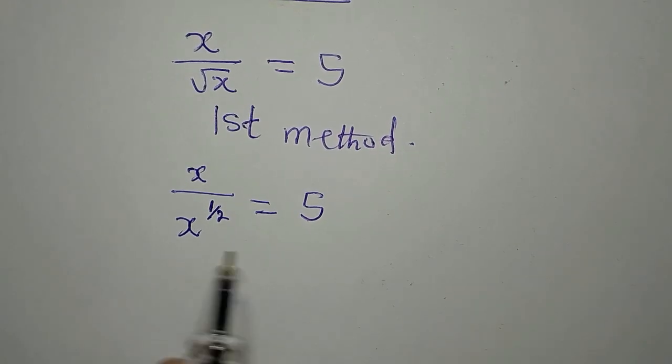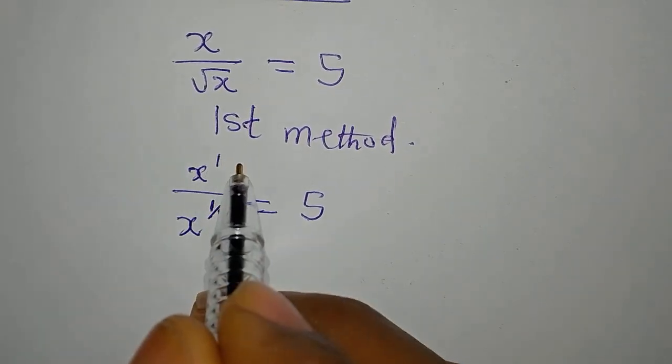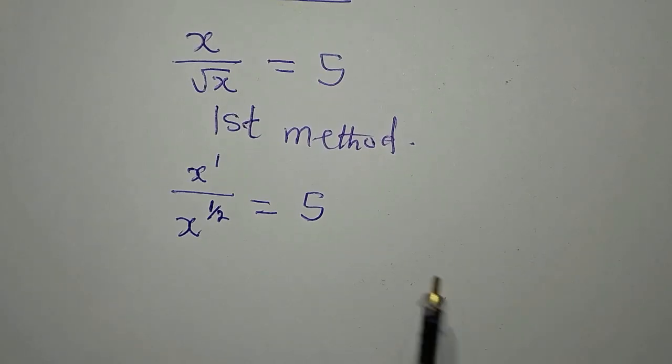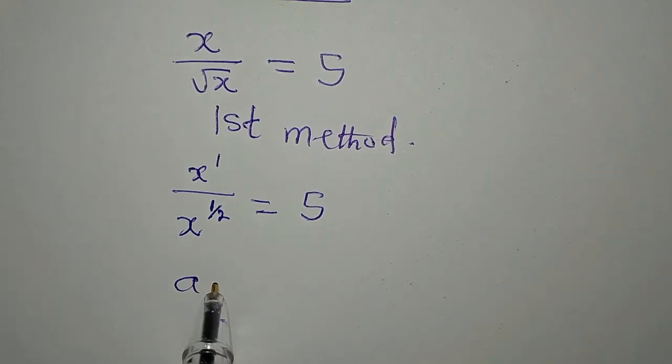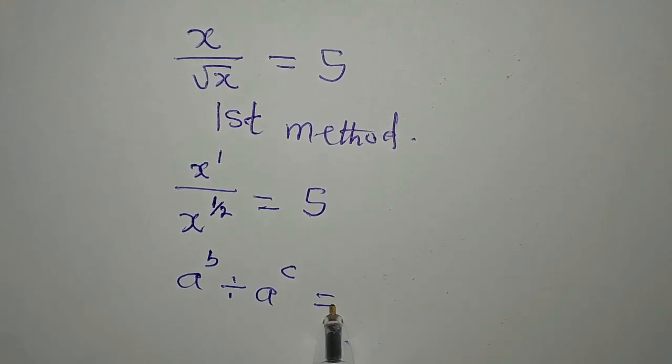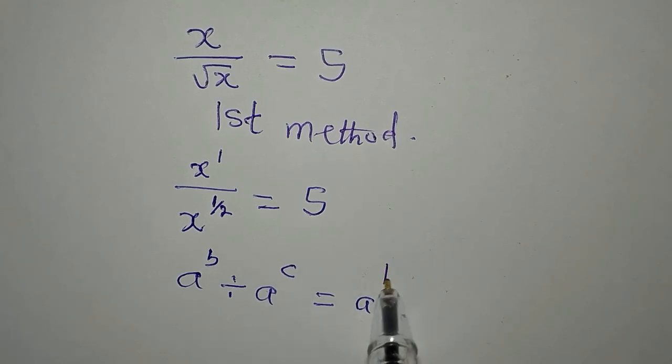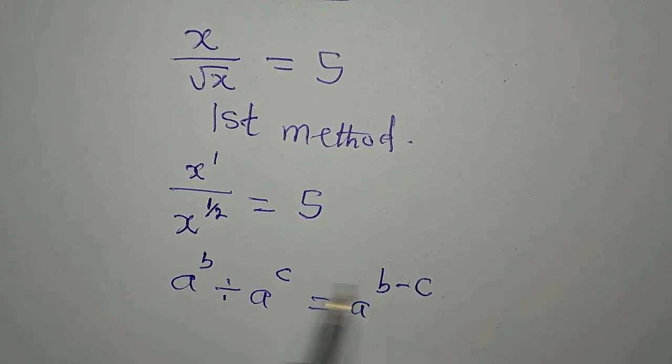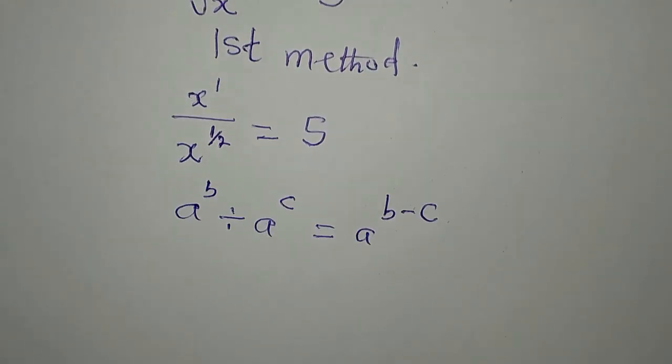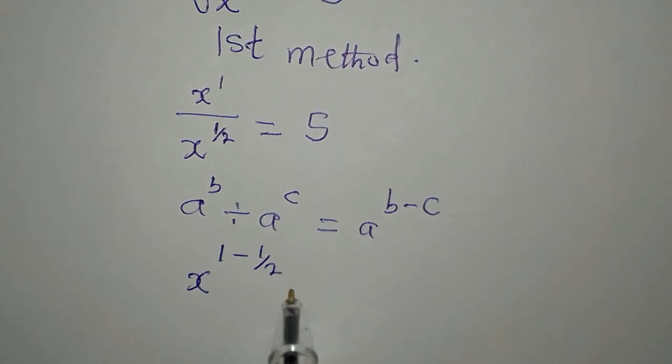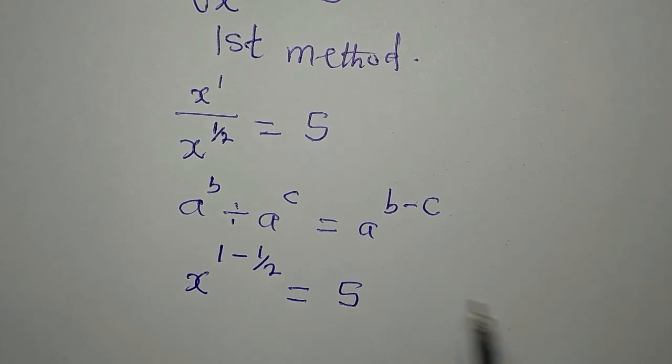Now the next thing is, remember that this is also to the power of 1. And if I obey one of the rules of indices, if you have a to the power of b divided by a to the power of c, this is the same thing as a to the power of b minus c. So if it is division, you pick one of the bases and subtract the powers. I'll apply the same thing here. I'll pick the x and then I'll have 1 minus 1 over 2. So this will now be equal to 5 on the right hand side.